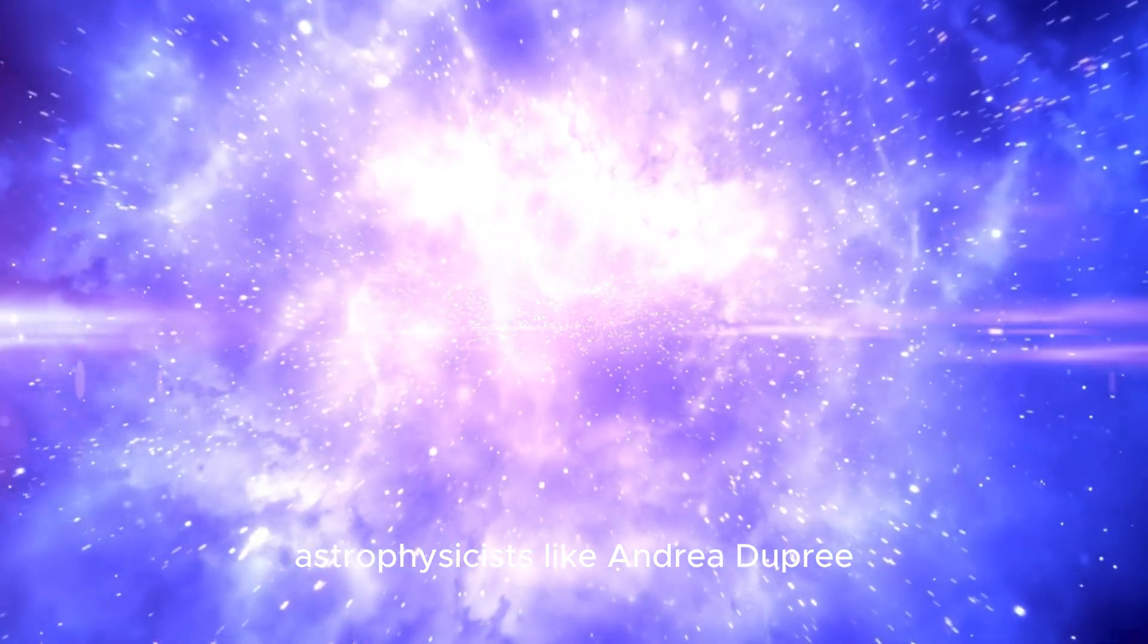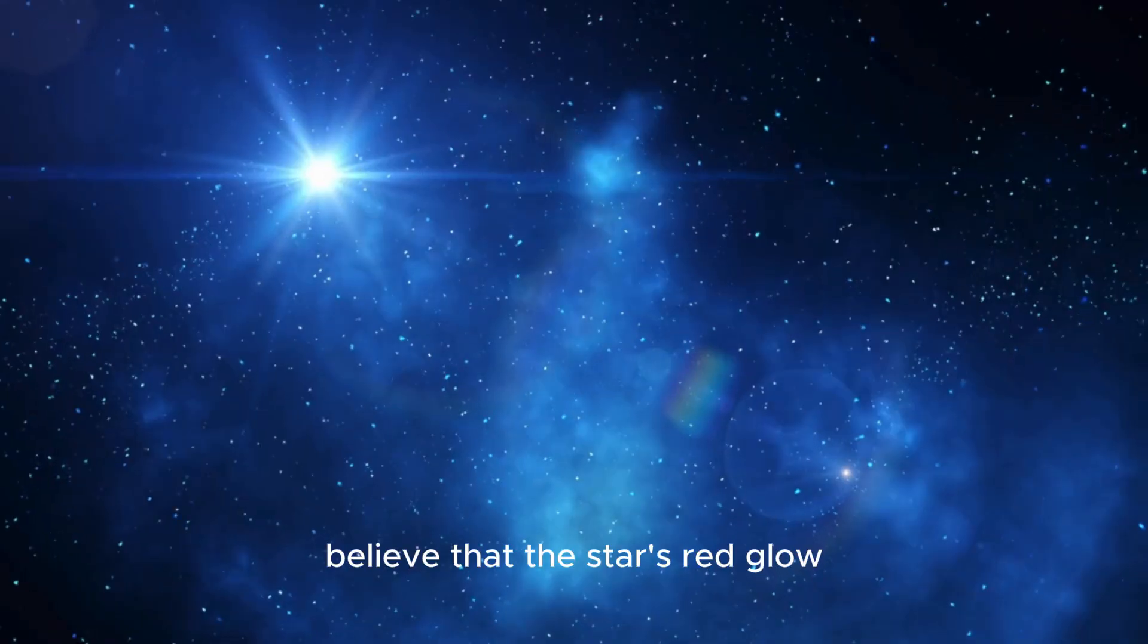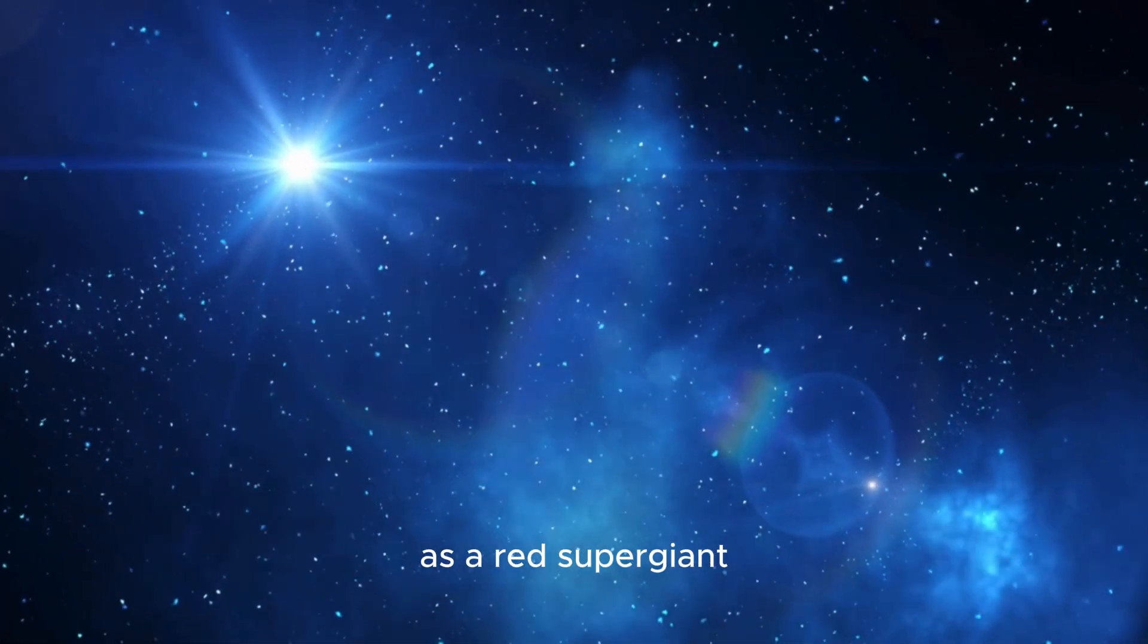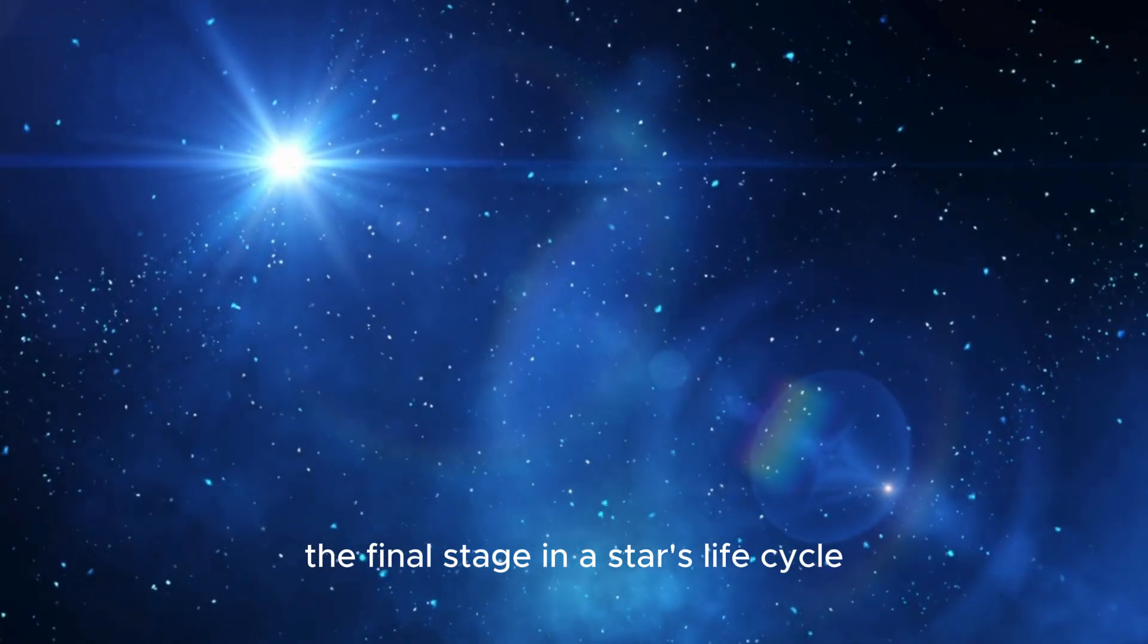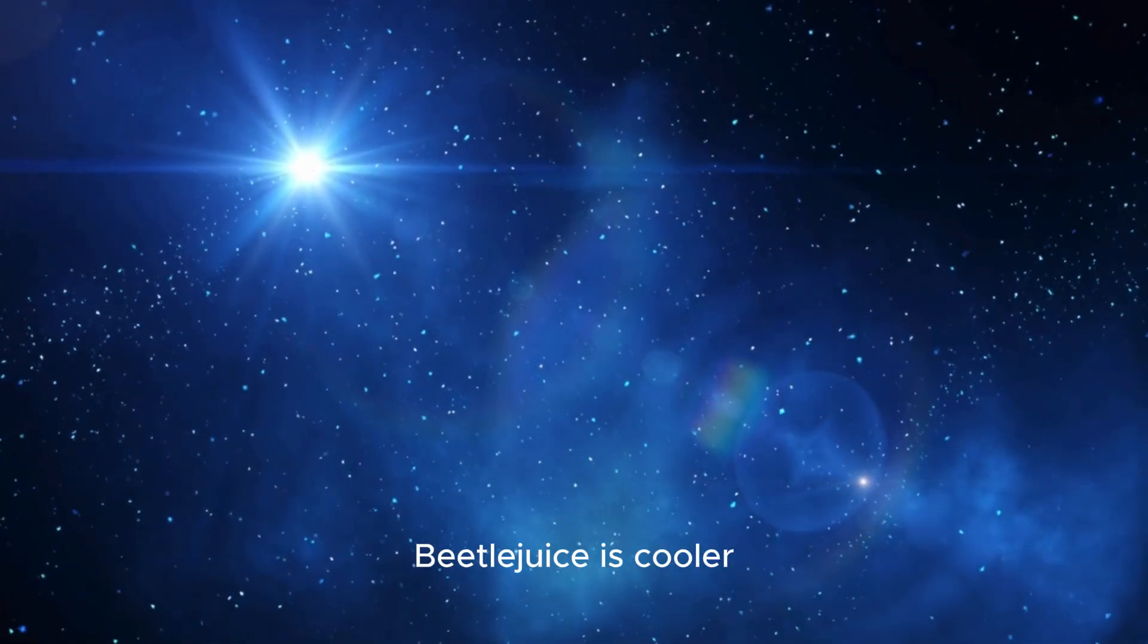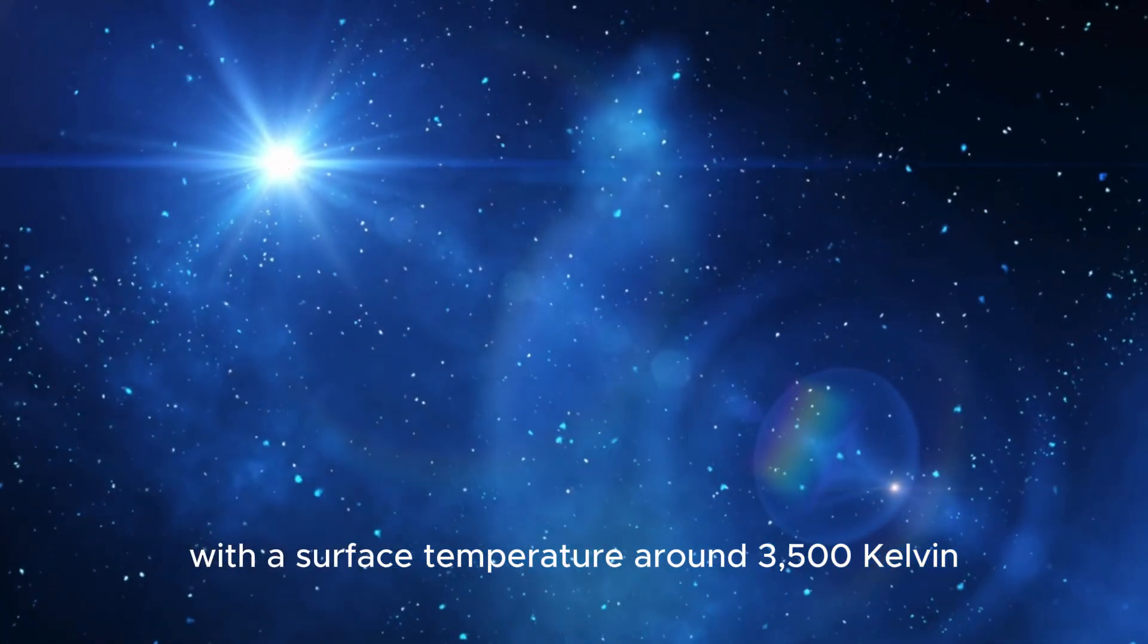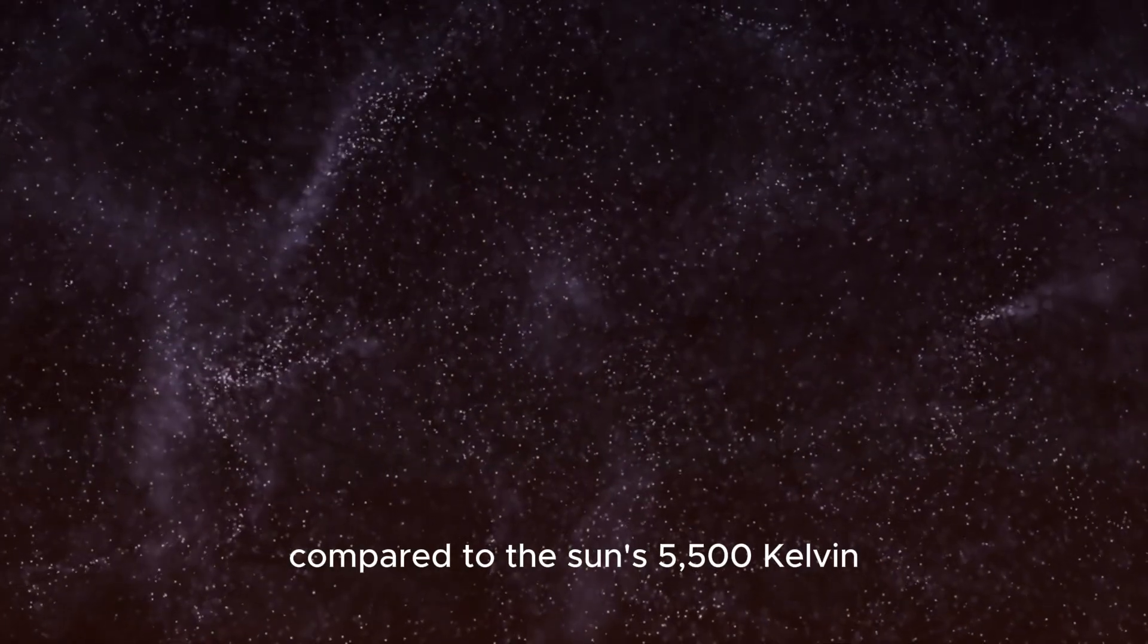Astrophysicists like Andrea Dupree from the Harvard-Smithsonian Center for Astrophysics believe that the star's red glow is a result of its status as a red supergiant, the final stage in a star's life cycle. Unlike our sun, which is much hotter, Betelgeuse is cooler, with a surface temperature around 3,500 Kelvin compared to the sun's 5,500 Kelvin.